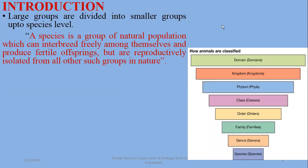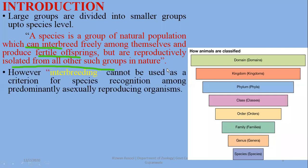The definition of species, which you have studied in lower classes: a group of naturally occurring populations which can interbreed in nature to produce fertile offspring, but are reproductively isolated from all other such groups in nature. These are the species you have.